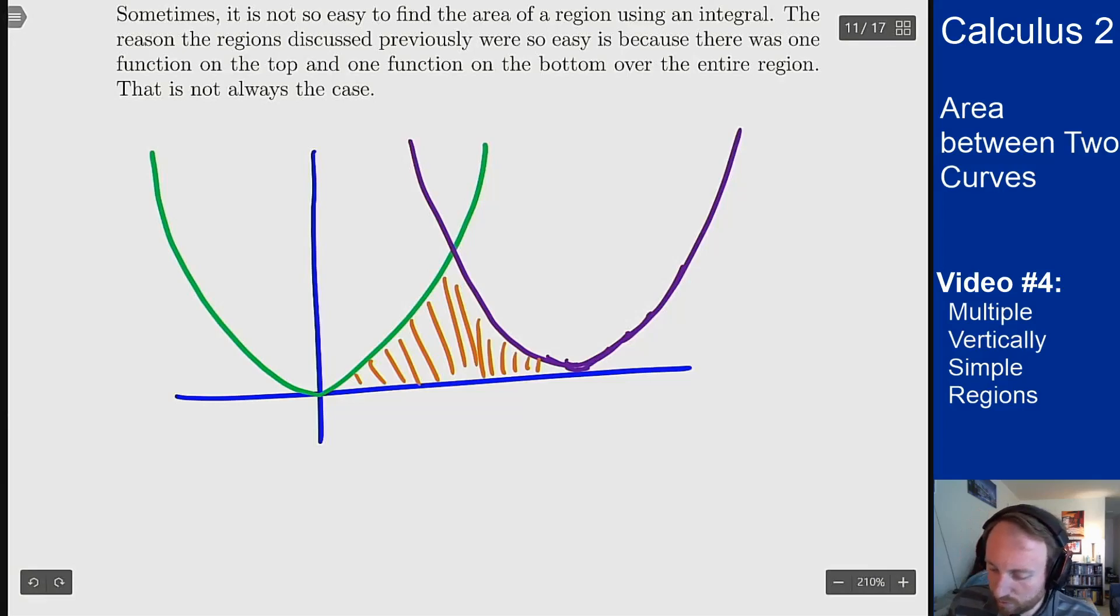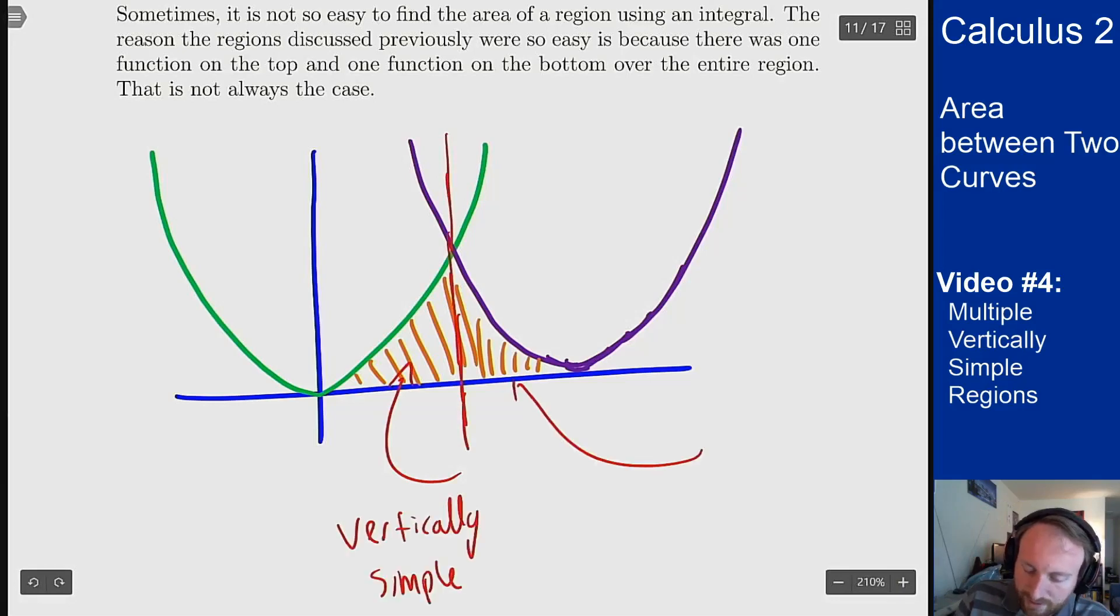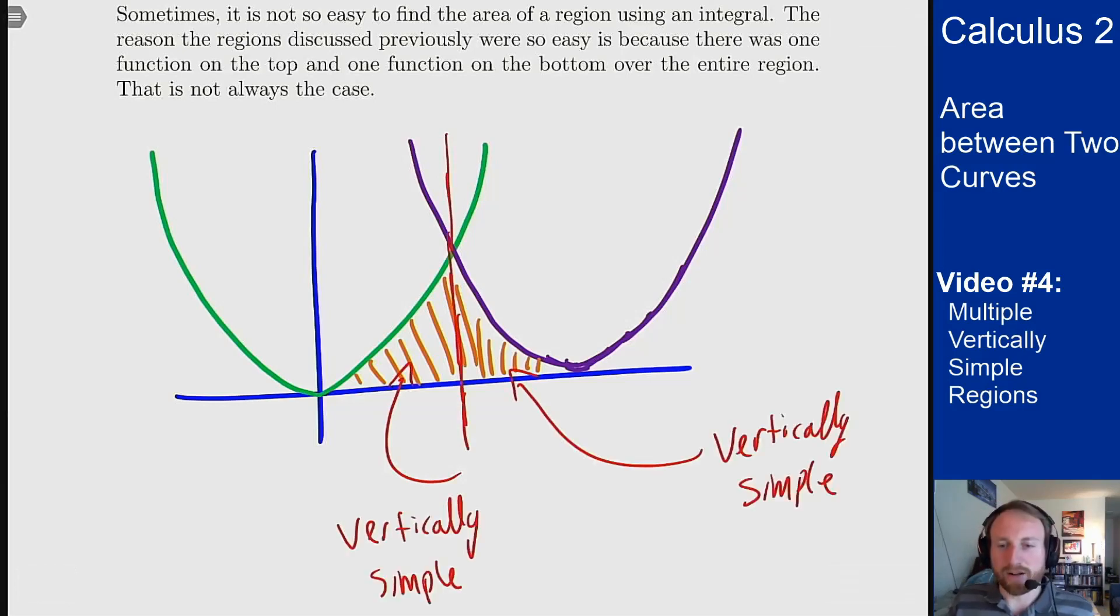So if I draw in one more line down the middle here, we now see this region here is vertically simple, as is this one. So I know how to find the area of each of those two smaller regions, then I can just add them together to find the area of the whole region.